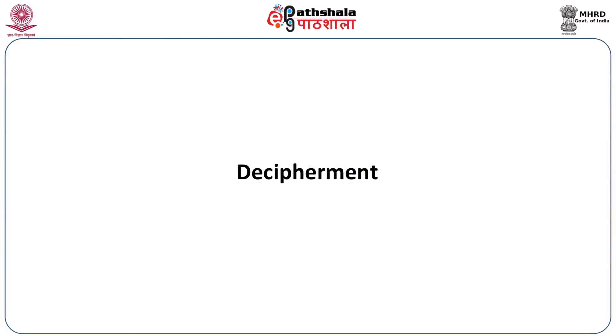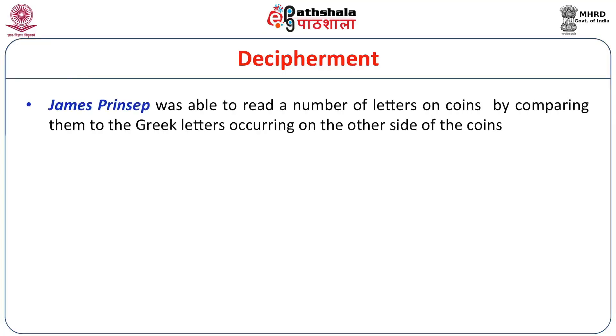The decipherment of the Kharosthi script was first accomplished by James Prinsep, who also deciphered the Ashokan Brahmi script in 1837. He was able to read a number of letters on coins by comparing the Kharosthi legend with the Greek legend. For example, the Greek 'Basileos Megalou Eukratidou' corresponds to the Northwestern Prakrit 'Maharajasa Mahatasa Eukratidasa', so by comparing Greek letters with Kharosthi letters, he could identify them.